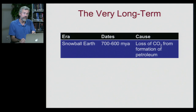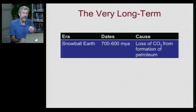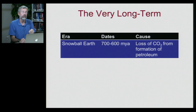Snowball Earth occurred between 700 and 600 million years ago, before the evolution of large land-living animals. The whole Earth was frozen because CO2 had been taken out of the atmosphere so effectively by microorganisms during the formation of petroleum.